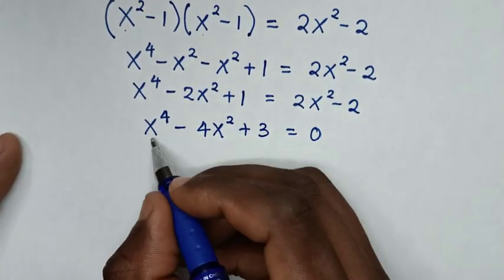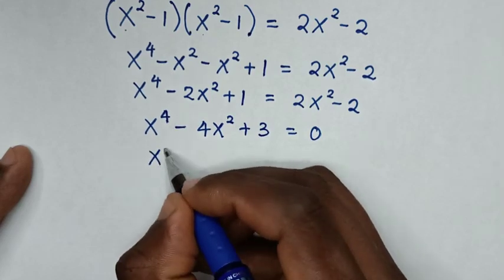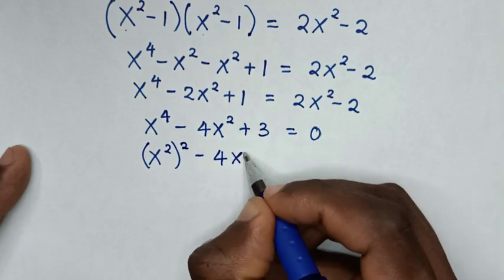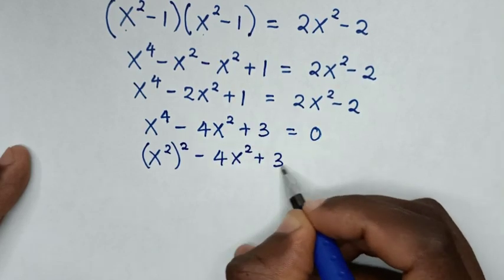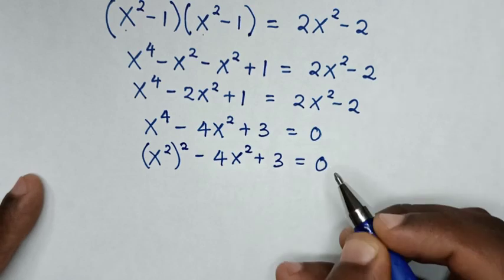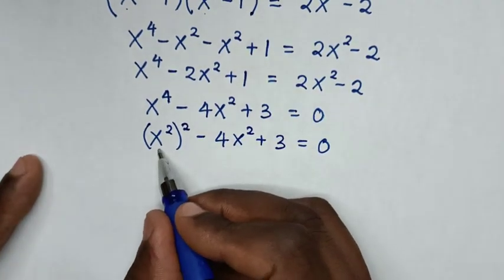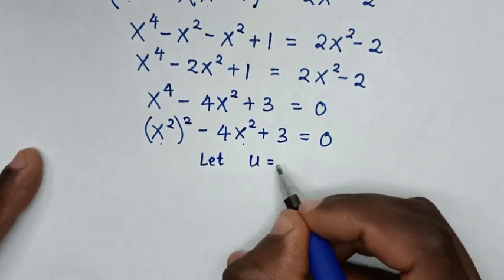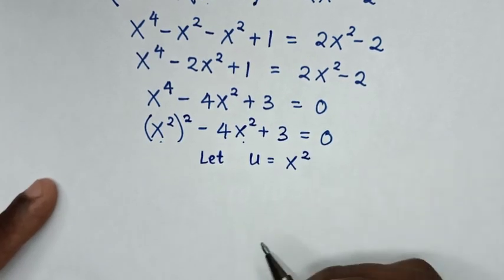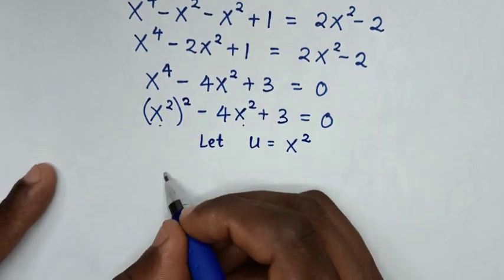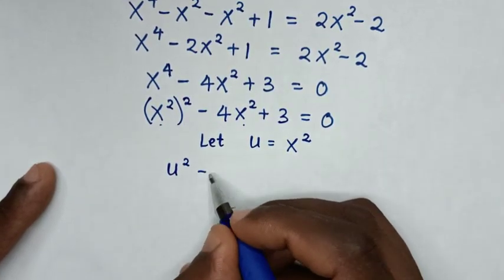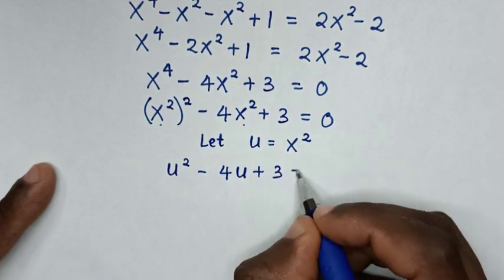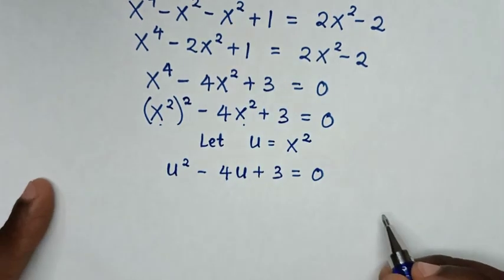Our equation x⁴ - 4x² + 3 = 0 can be written as (x²)² - 4x² + 3 = 0. We let u = x², giving us u² - 4u + 3 = 0.